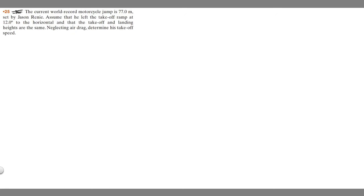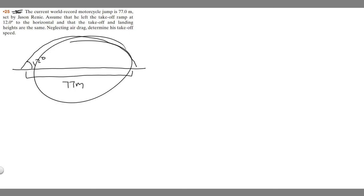So we draw a diagram of what's going on here. We have this guy doing a motorcycle jump. He's leaving at 12 degrees. Imagine his jump's going to look something like this. His ramp's going to be 12 degrees, so he goes up like this. We know the jump distance is 77 meters. This right here is 77 meters. This is just a diagram of what's going on.